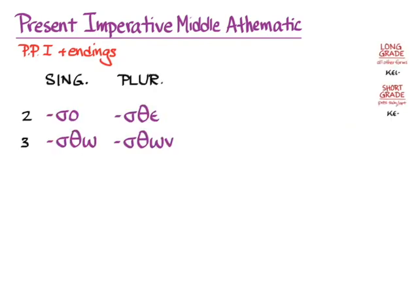The present imperative middle does have the athematic endings that we know, and we'll go back to the long grade because we're not subjunctive or optative anymore, and we'll get κεῖσο, κείσθω, κεῖσθε, and κείσθων.